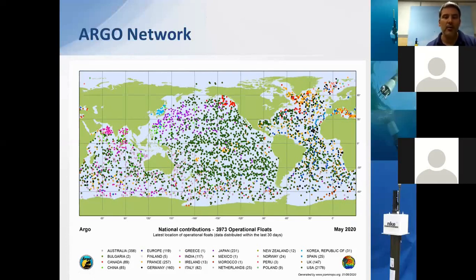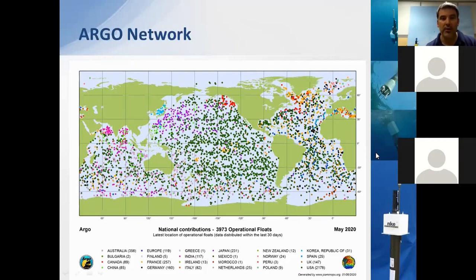If you are here today, you are probably at minimum familiar with the Argo program, that is now a reference for all ocean observation programs and networks in the world. This network includes up to 4,000 floats deployed by a large range of countries, and the program is an example of successful international cooperation. It has proved the ability to develop a common data management system, and all data and metadata are shared all over the world. You can see here the map showing the last location of all the active floats — nearly 4,000 units.